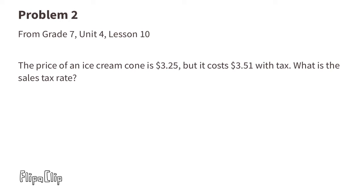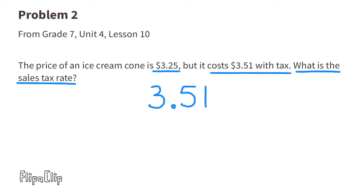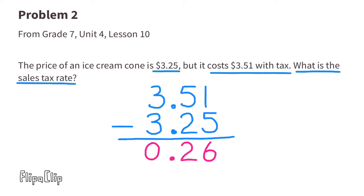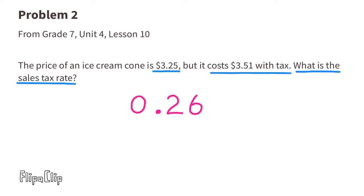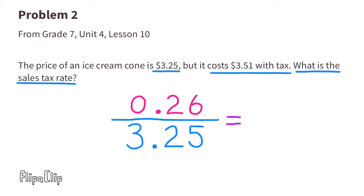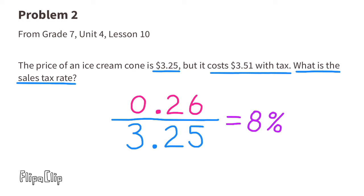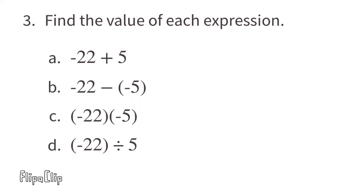Problem number two from 7th grade Unit 4 Lesson 10: the price of an ice cream cone is $3.25, but it costs $3.51 with tax. What is the sales tax rate? $3.51 minus $3.25 is $0.26, so the tax is 26 cents. We ask: 26 cents is what percent of $3.25? The sales tax rate is 8%, because the sales tax of 26 cents is 8% of the price of $3.25.